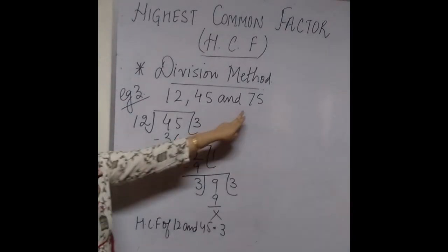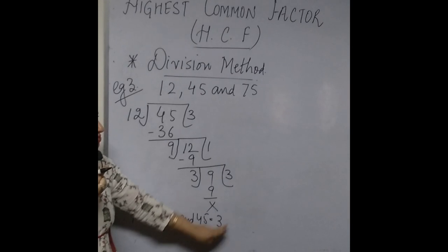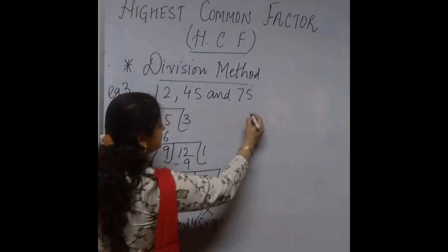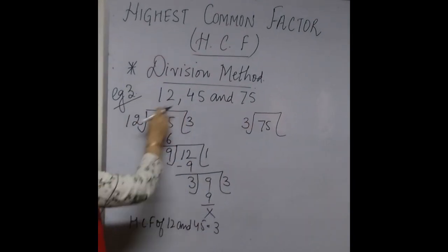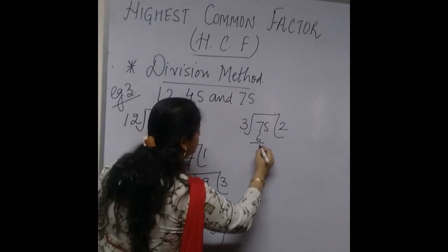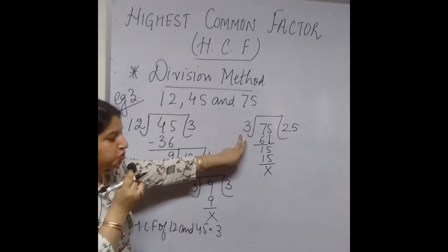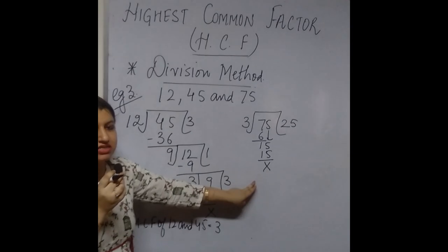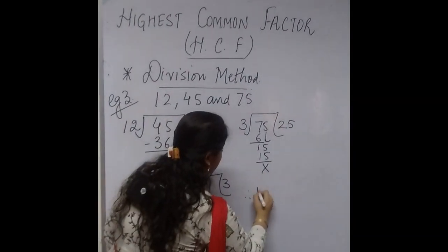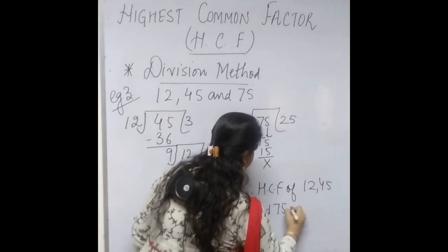Now children, you are still left with the third number, which is 75. The HCF obtained from the first two numbers will now be used with the leftover number 75, and we proceed with the division method again. So 75 is divided by 3 — the HCF of the earlier two numbers. 3 times 25 is 75, and you are left with a remainder of 0. Since the remainder is 0 on dividing 75 by 3, the HCF of all three numbers is 3. Hence, HCF of 12, 45, and 75 is 3.